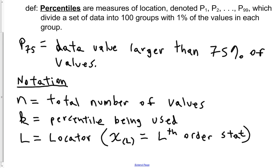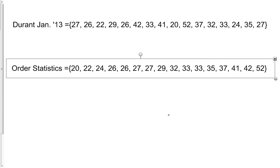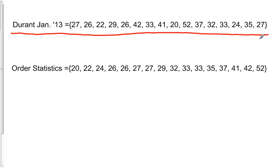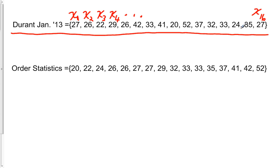Let's go ahead and talk about percentile with an actual dataset. Here we have the point output for Kevin Durant in the month of January. These data values are X-sub-i's: X1, X2, X3, X4, continuing up to X16. When there are no parentheses around the subscript, we're talking about raw data values. Notice this list is not in any particular order of magnitude — the numbers go higher and lower because this represents chronological order.